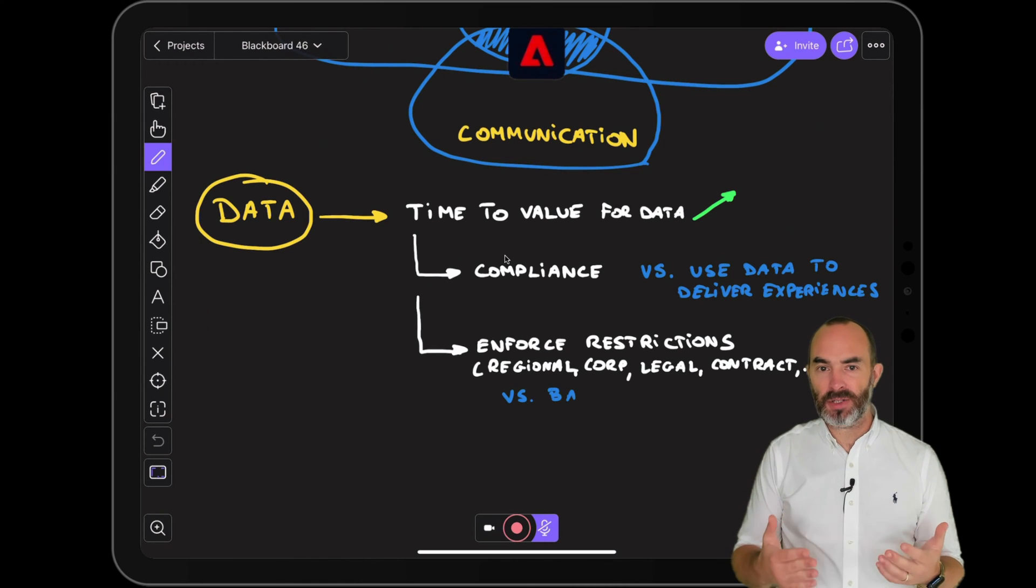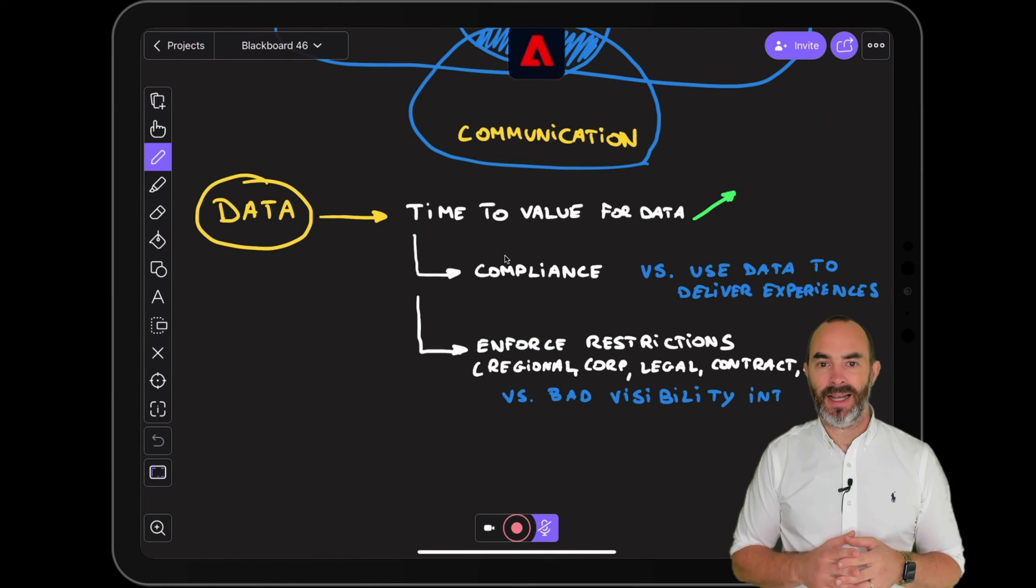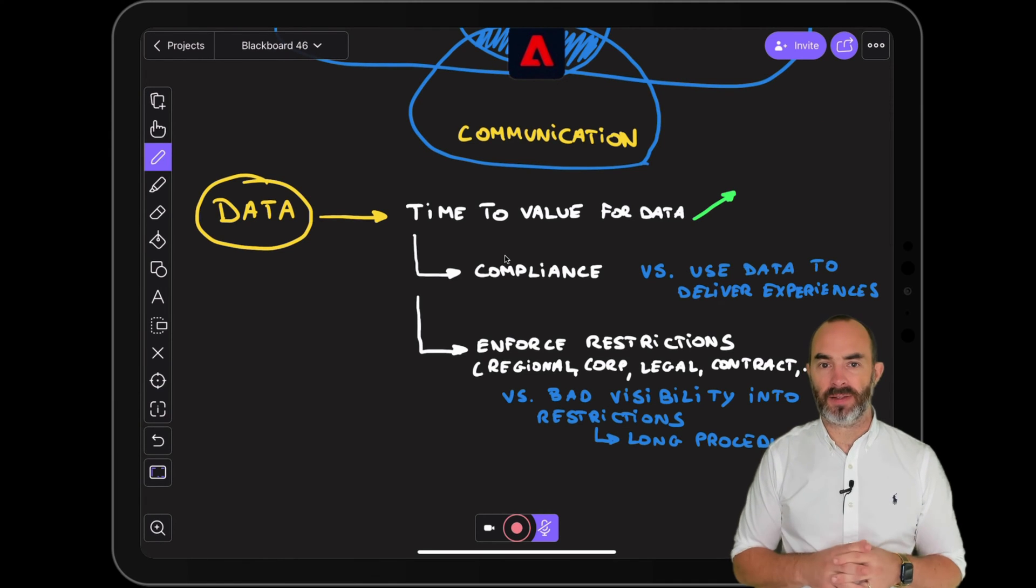The guardians of the data and the marketers speak different languages and they use different applications. As such it's not easy for the business teams to use data while respecting regulations which leads to a long and complex internal procedures to get permissions to use specific data for marketing.